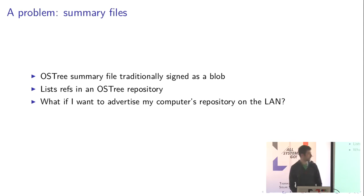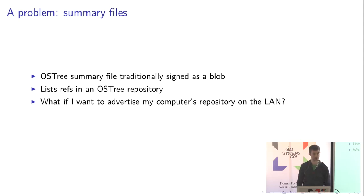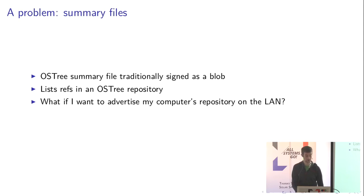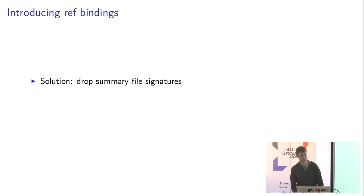But if I am on a local area network with refs from multiple repositories — my apps, my OS vendor — and I want to expose my local OS tree repository on the network, I have things from three different summary files that I need to combine into one. I cannot do that with one signature covering the entire file, because I cannot reproduce any upstream vendor's signature, and I cannot sign with three keys for different bits of content. So the solution is to drop the signatures.